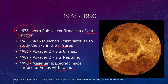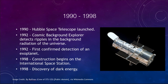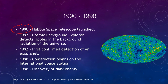Moving into the 1990s, one of the earliest milestones was the launch of the Hubble Space Telescope, which is still operating as of this recording and has opened up nearly 30 years of sky study. In 1992, the Cosmic Background Explorer — COBE — was launched and detected ripples in the background radiation of the universe, which tell us something about how the very earliest structure in the universe formed.